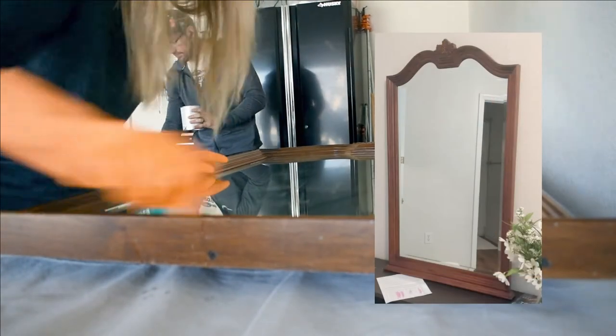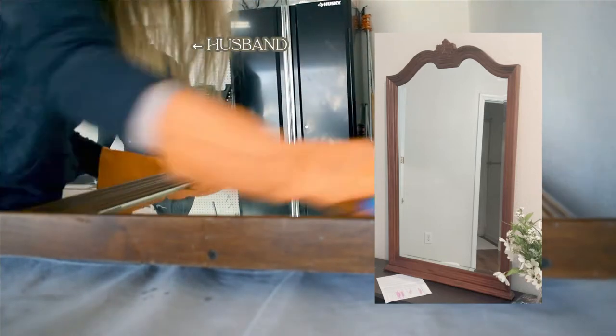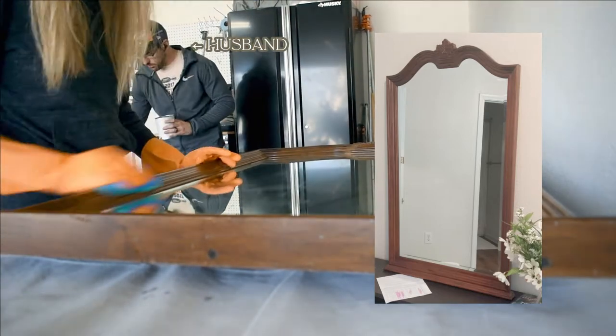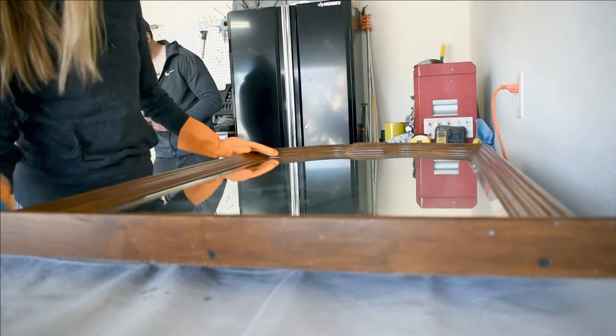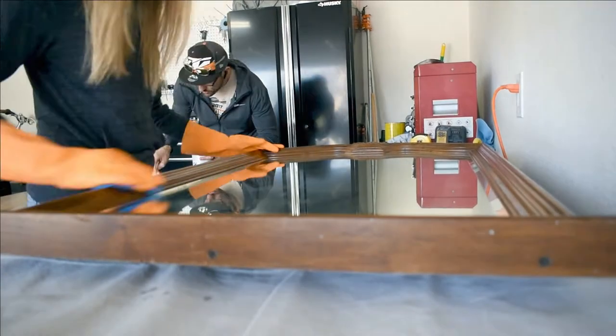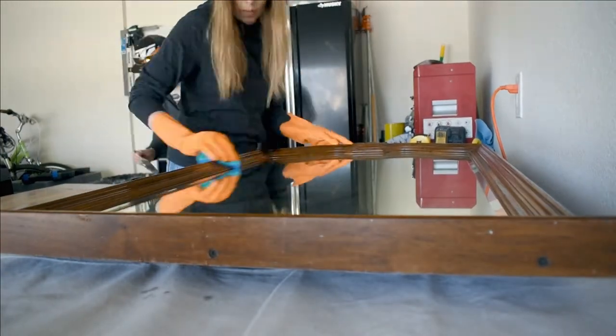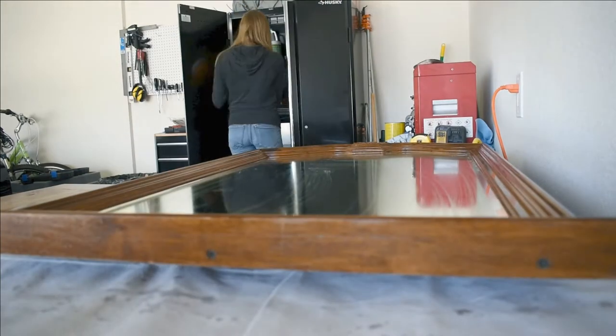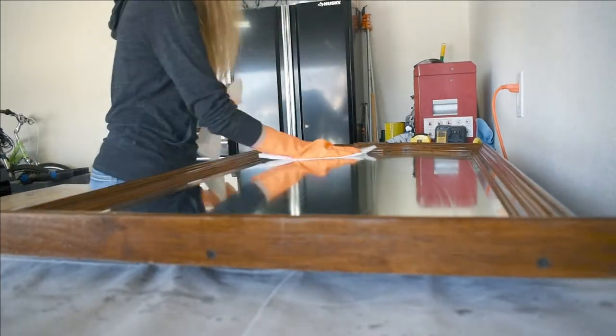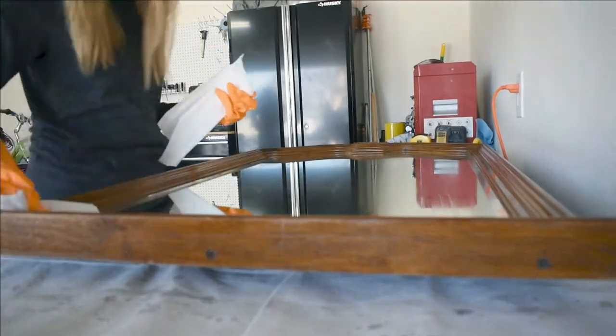Today we are flipping this traditional French Provincial style mirror that I got from the thrift store for just $15. My goal for this piece is to make an aged and chippy finish that's white and gold. I really want to make it look antique, though I'm not sure exactly how yet.